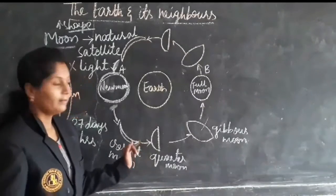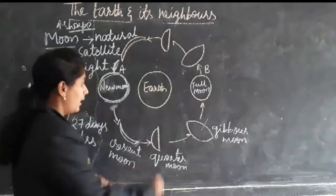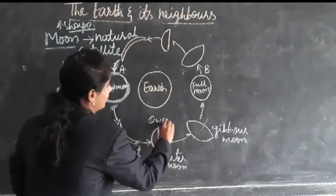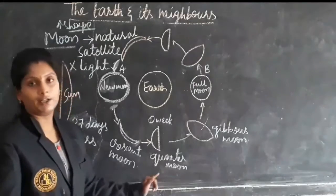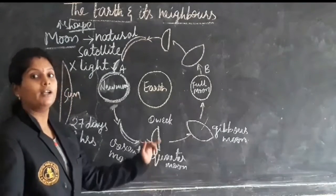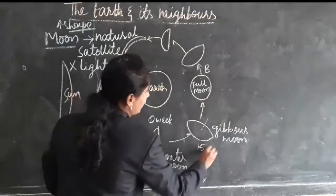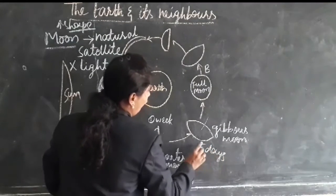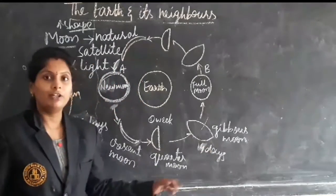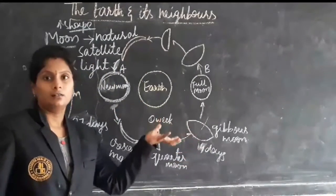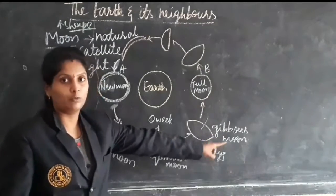After around one week, the shape changes again and we can see a quarter moon. And after reaching the 14th or 15th day, we can see the gibbous moon — somewhat not half, not full or complete, but less than full. That we call it as a gibbous moon.